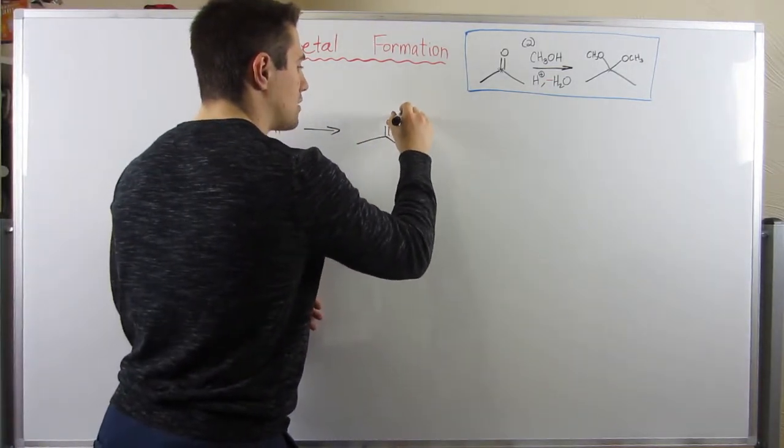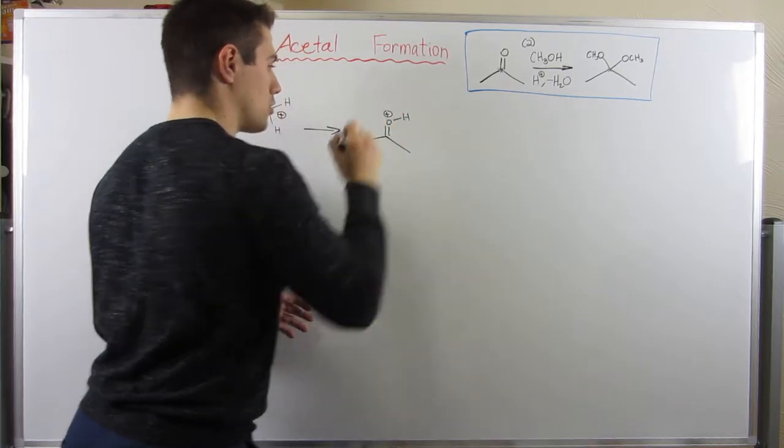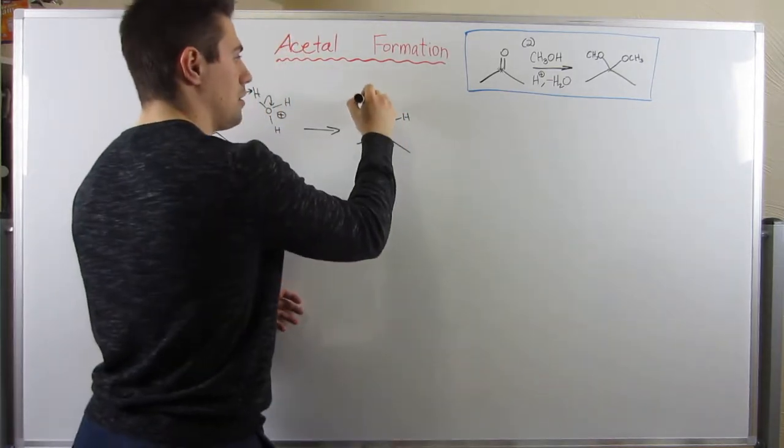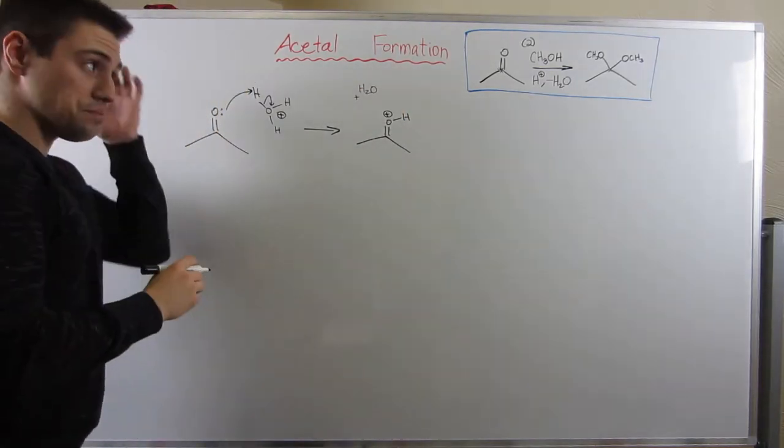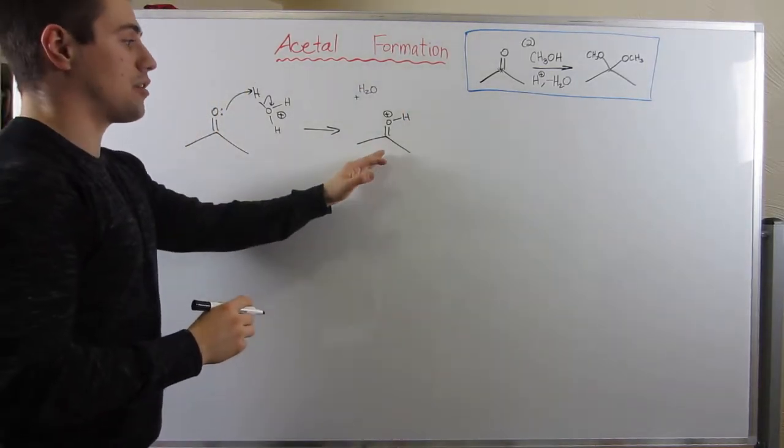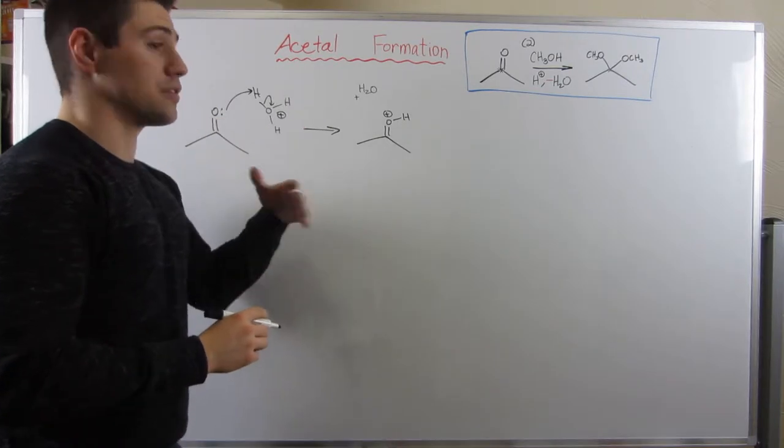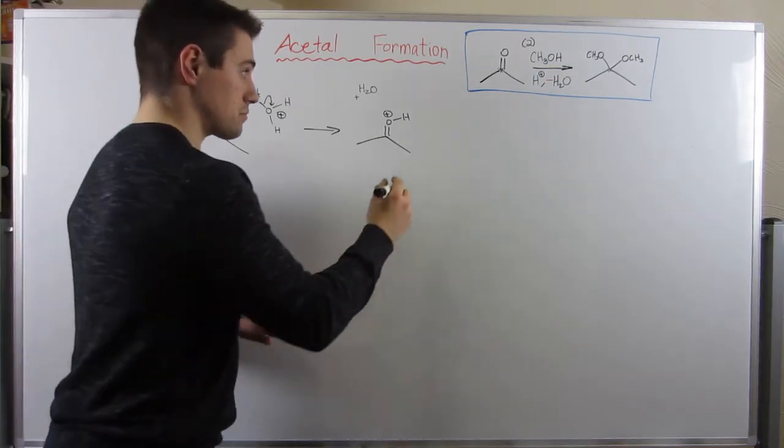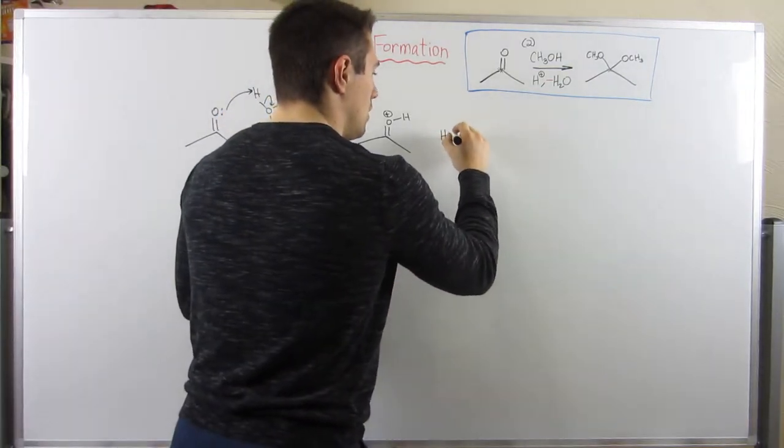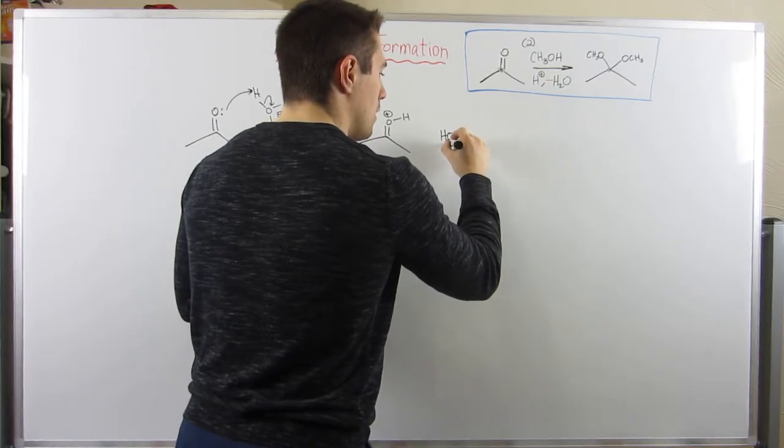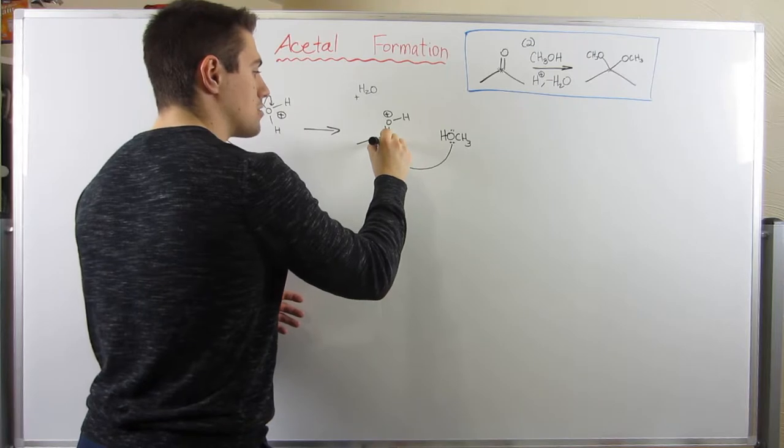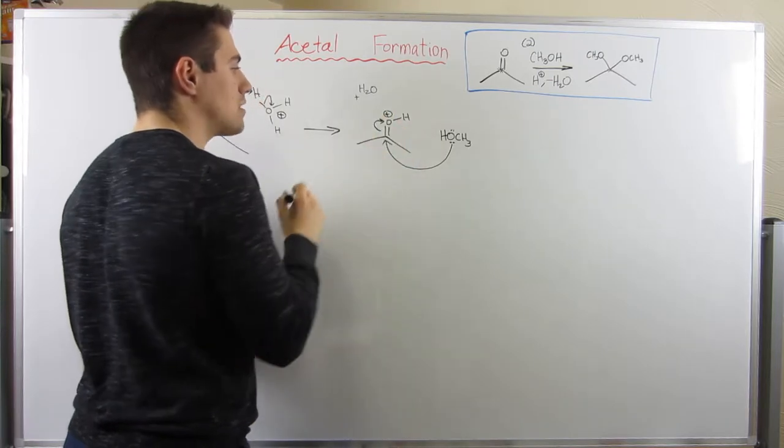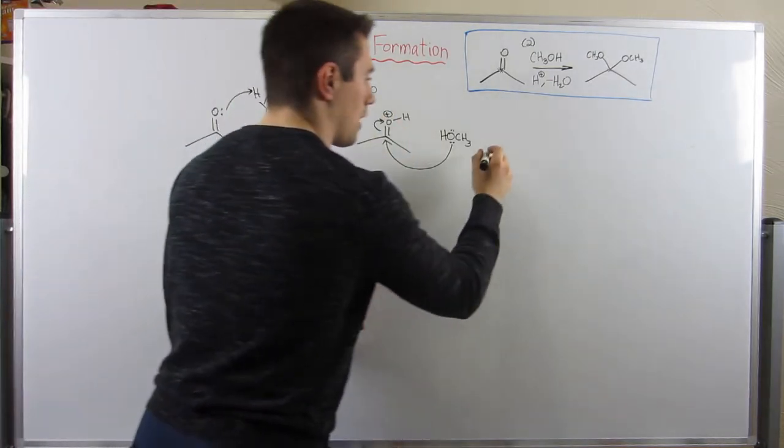So we now have our activated protonated carbonyl. What's our next step? Well, now that we've activated our carbonyl, our less reactive nucleophile can do his job. Now let's bring in our methanol. He's going to come in and attack this carbonyl that's now a little more activated. Electrons swing up.